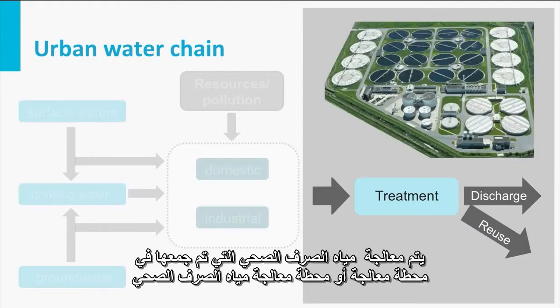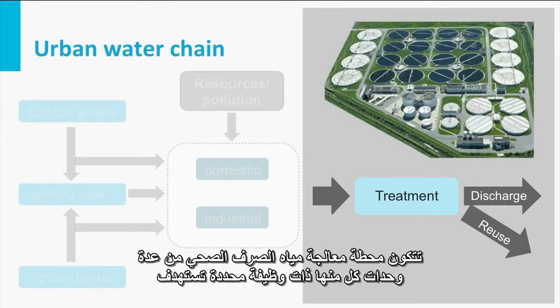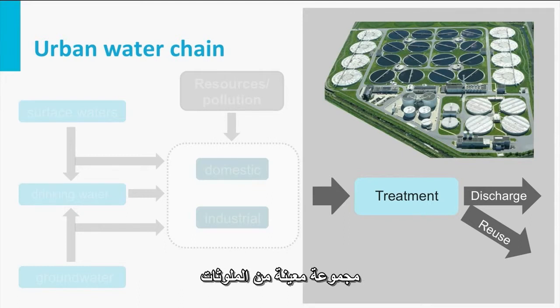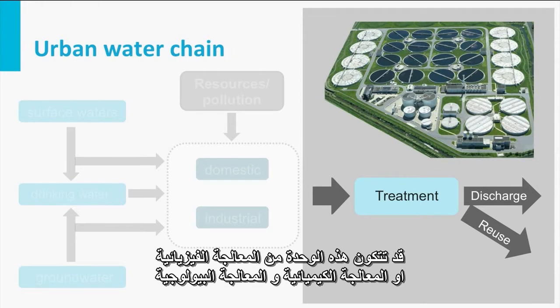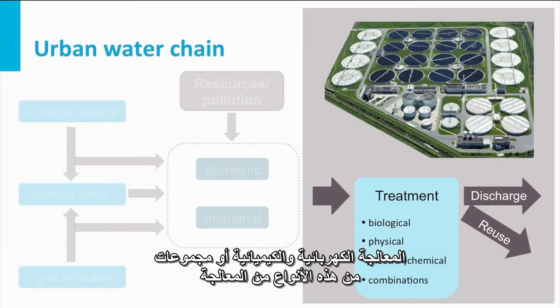The collected sewage is treated at a sewage treatment plant or wastewater treatment plant. The sewage treatment plant consists of several functional units, each targeting a specific group of pollutants. Such a unit may consist of physical treatment, chemical treatment, biological treatment, electrochemical treatment, or combinations of these types of treatments.